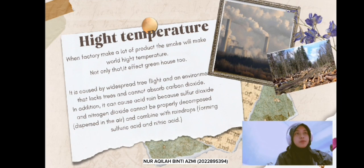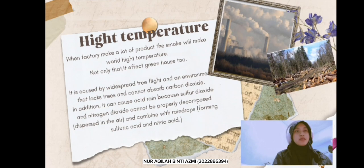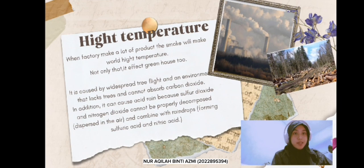Third is high temperature. When a factory makes a lot of products, the smoke will cause high temperatures. Not only that, it affects the greenhouse too. It is caused by emissions that cannot absorb carbon dioxide. It can also cause acid rain because sulfur dioxide and nitrogen dioxide cannot be properly decomposed — they disperse in the air and combine with raindrops to form sulfuric acid and nitric acid.